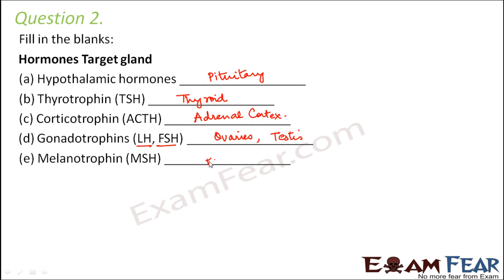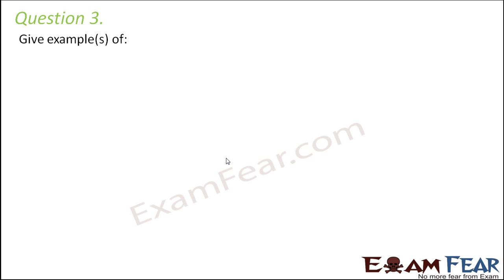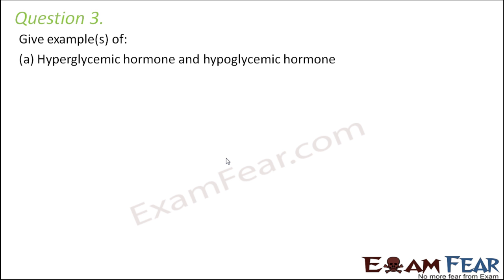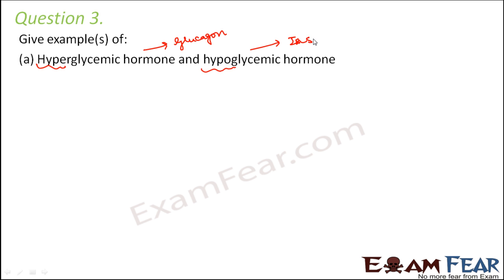Melanotropin's target gland is the pineal gland, and that is how it regulates the secretion of melanotropin from the pineal gland. Question number three: give examples of hyperglycemic and hypoglycemic hormones. Hyper means more glucose in the blood, so the hyperglycemic hormone — which increases blood glucose level — is glucagon. The opposite, the hypoglycemic hormone, is insulin.